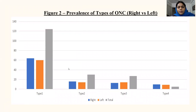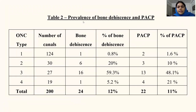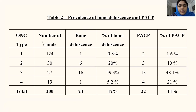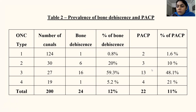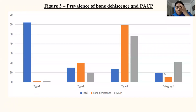This is a block presentation of the same. The prevalence of bony dehiscence and pneumatization of the anterior clinoid process is shown here. Out of the total types of optic nerve canal, bony dehiscence was most common with type 3, accounting for nearly 59.3% of cases. Nearly 27 optic nerve canals were identified as type 3, and pneumatization of the anterior clinoid process was also most common in type 3, accounting for nearly 48%. This is a block presentation of the same.